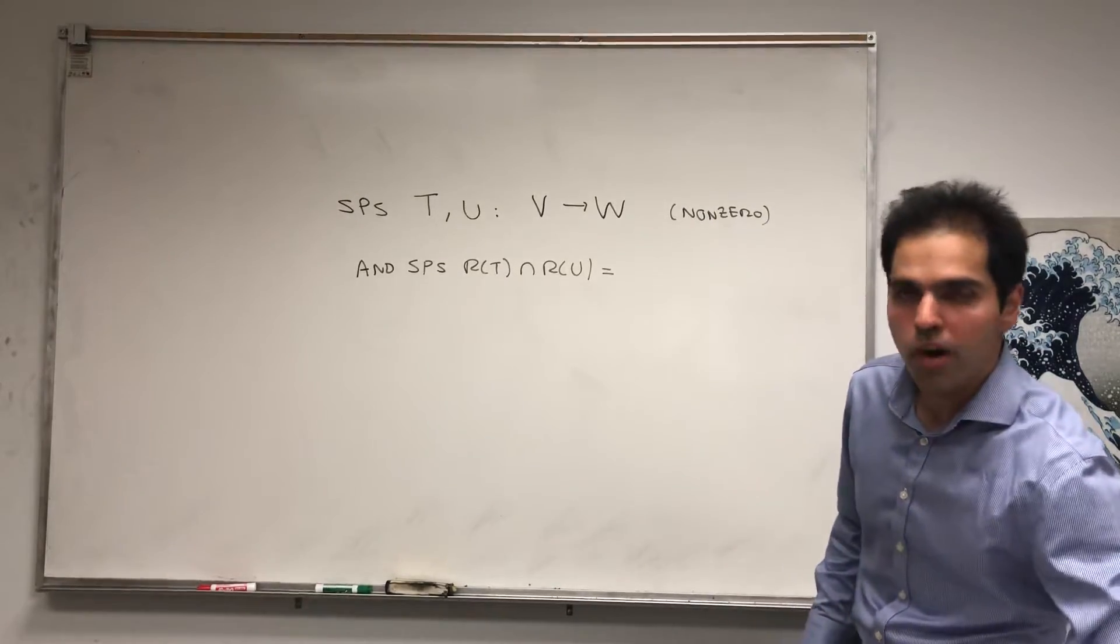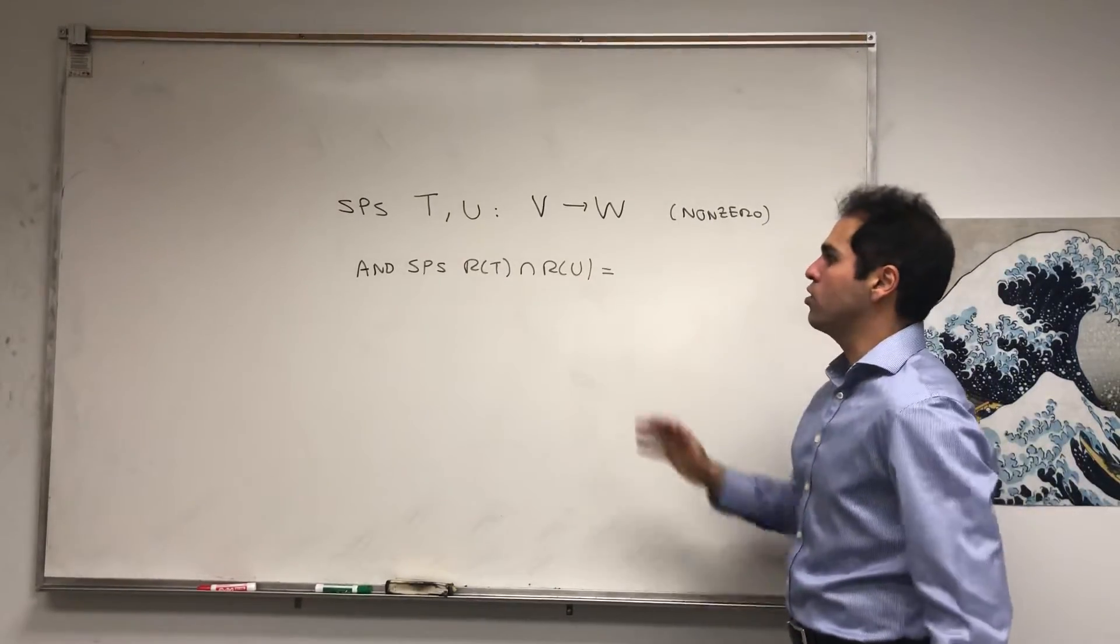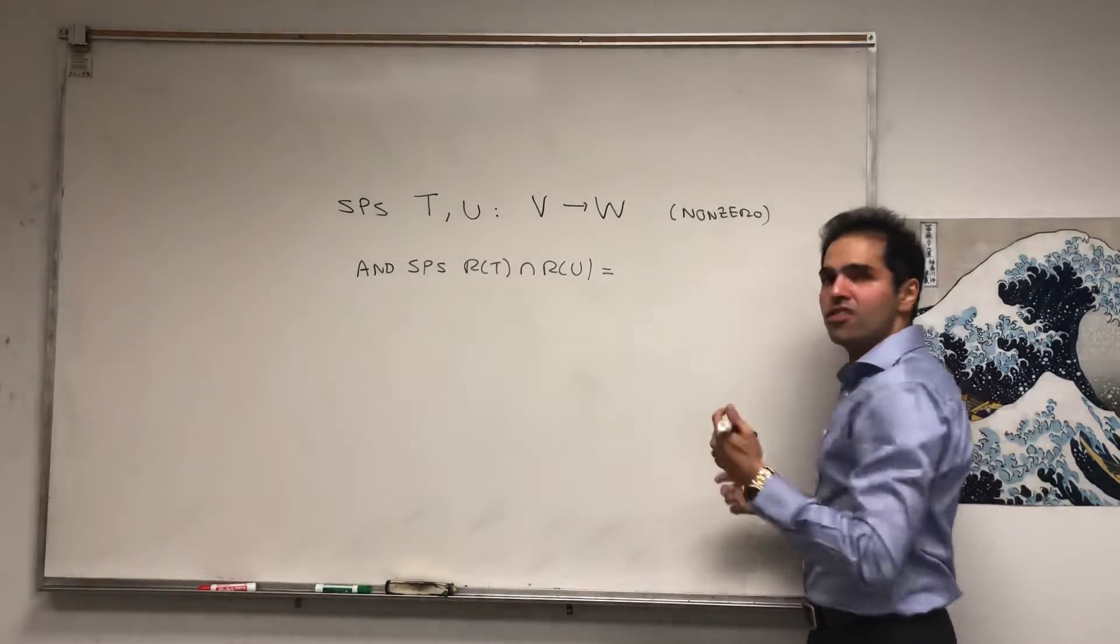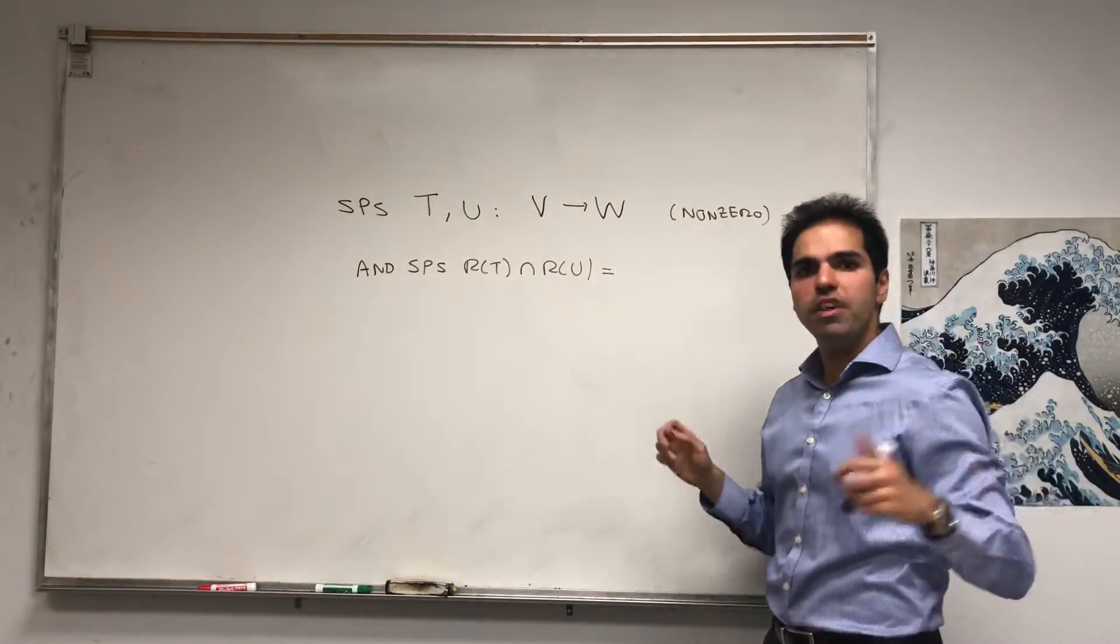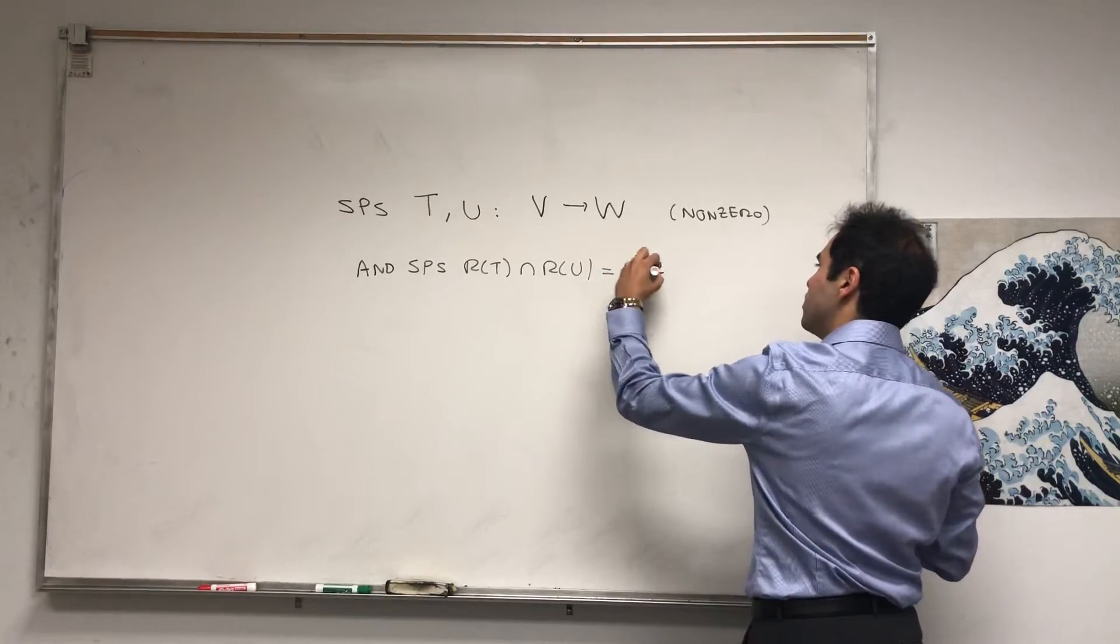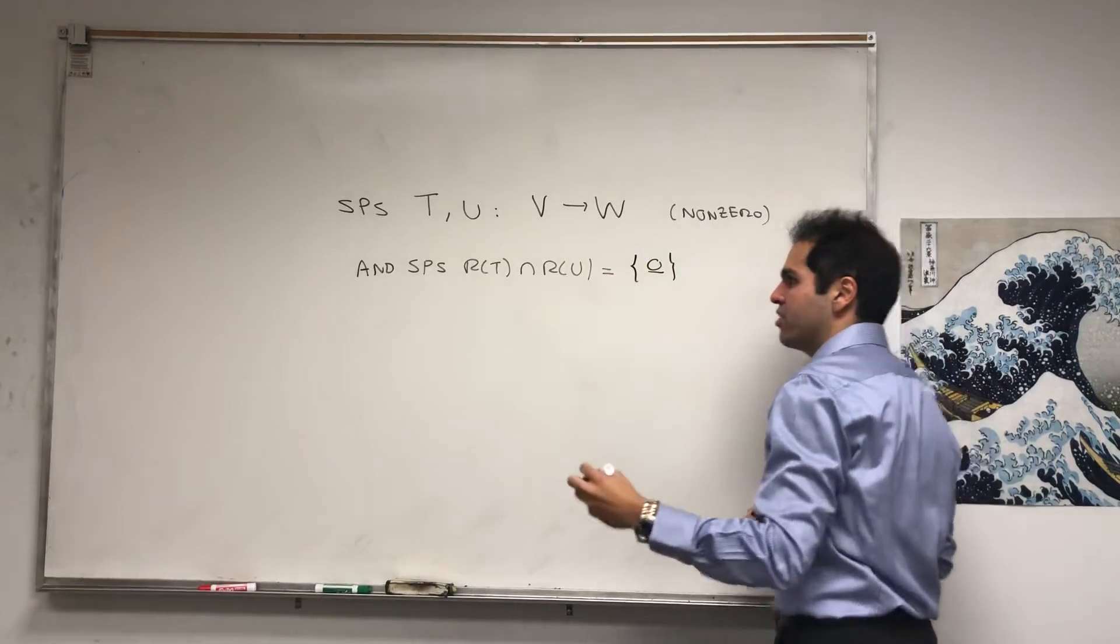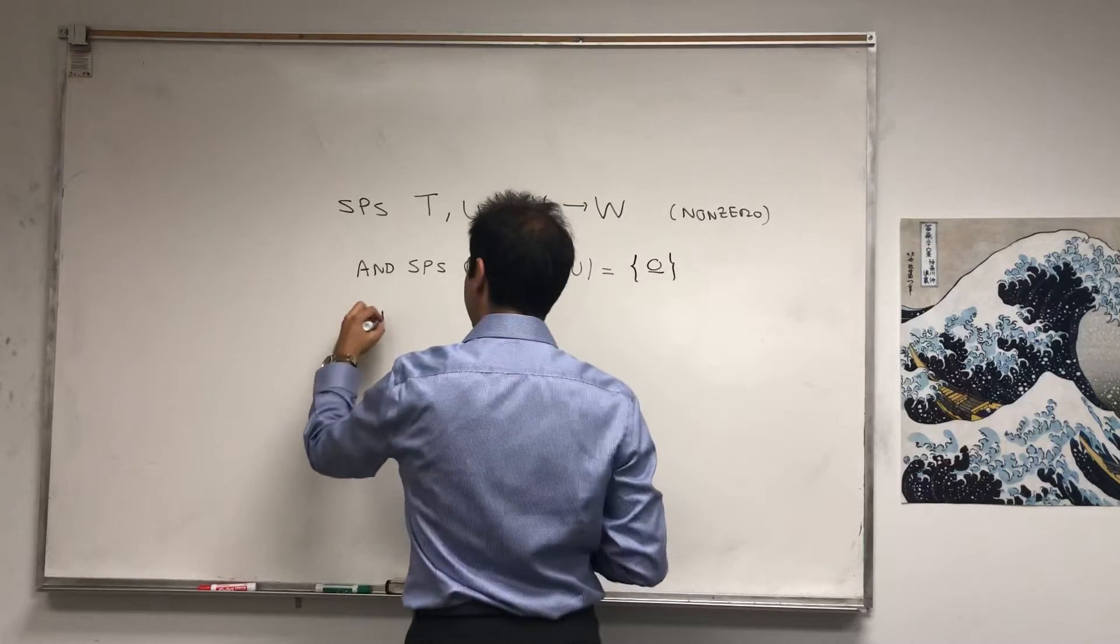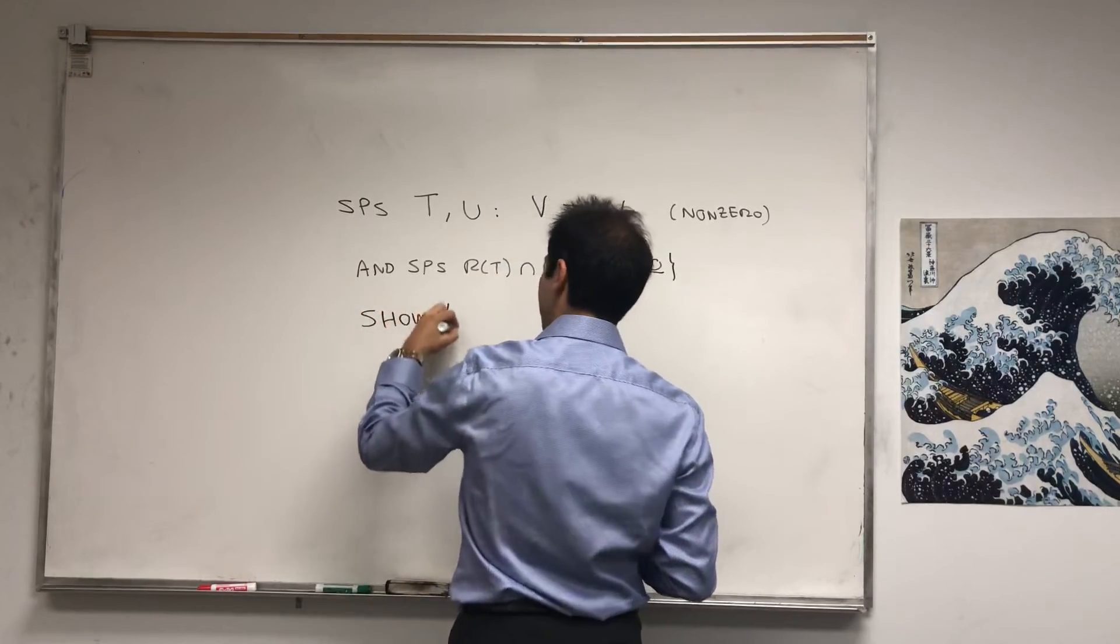Suppose the range of T intersect range of U - again, the range is just the set of all possible outputs of T or U. Well technically they are subspaces so they can't be completely disjoint, but let's suppose that their intersection is just the zero vector.